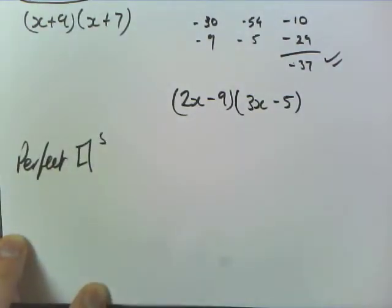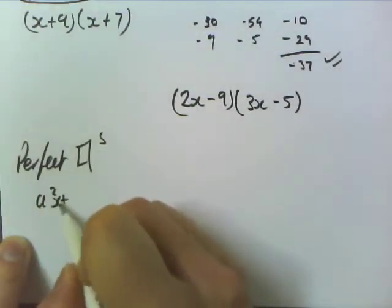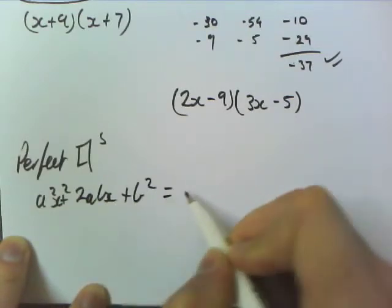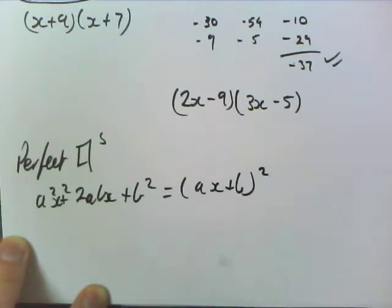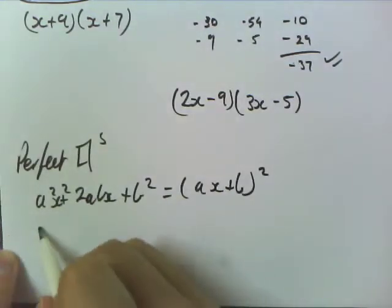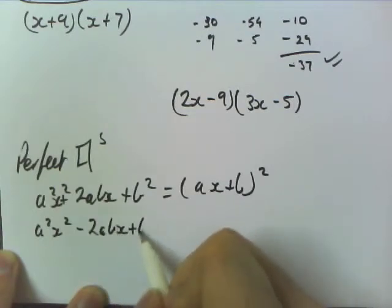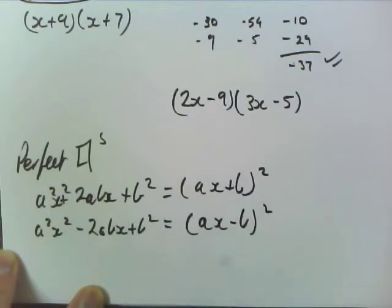It's the same rule, only this time you're going to use it backwards. So a squared x squared plus 2abx plus b squared. When you factorize it, it becomes ax plus b all squared. And again, the book doesn't give you the minus version of this. So that's the minus version of that as well.